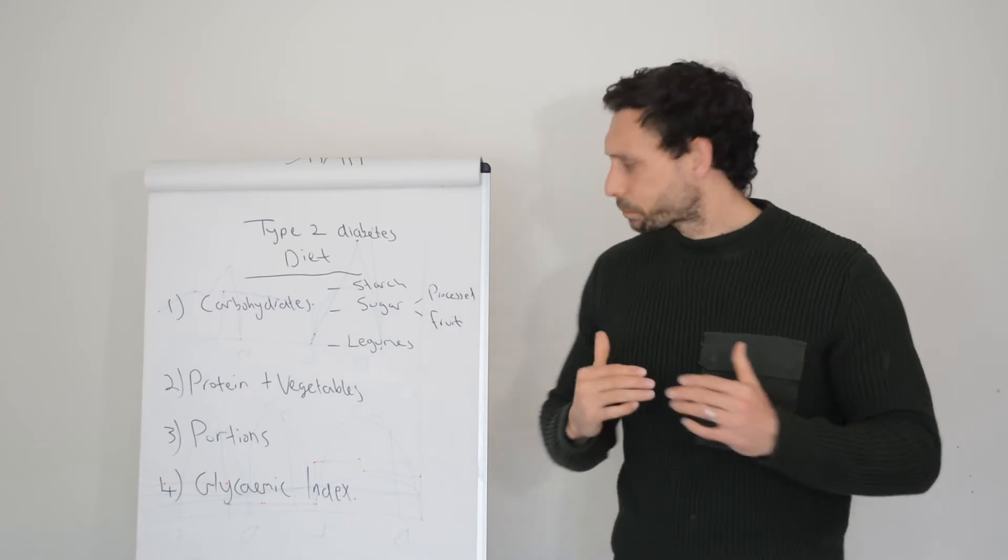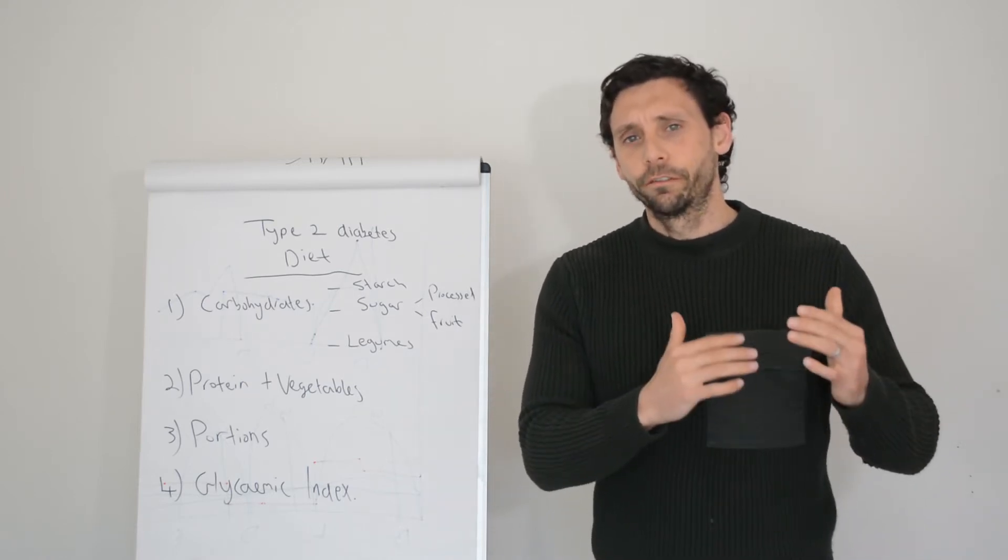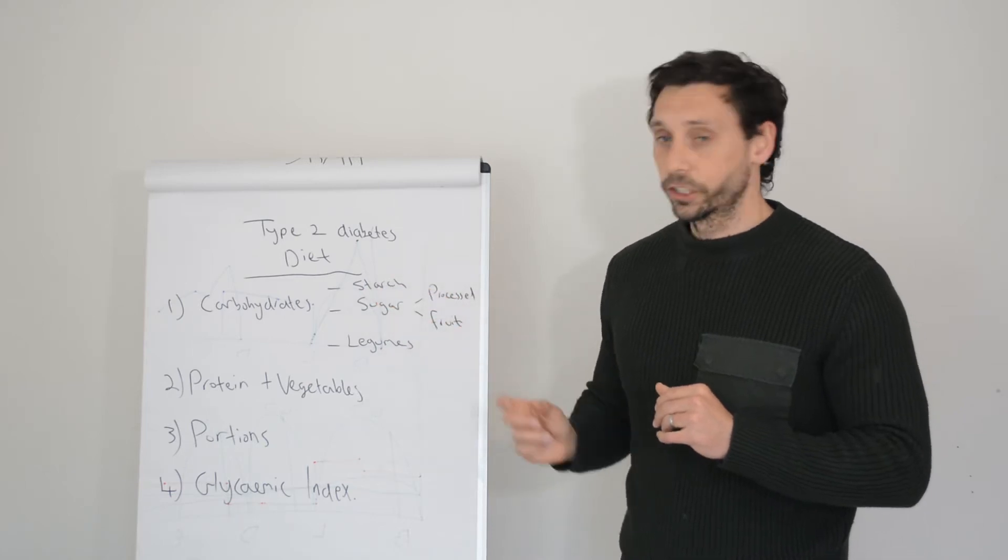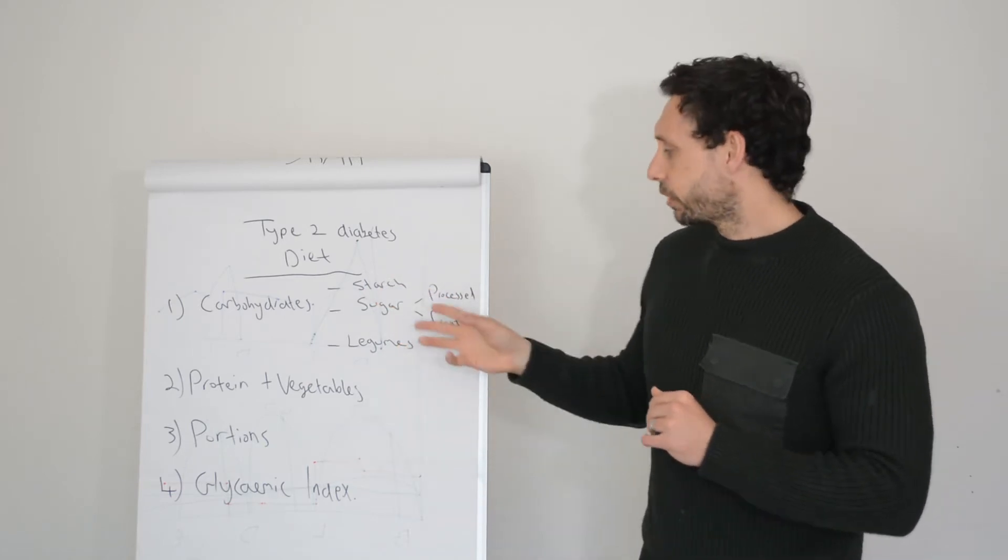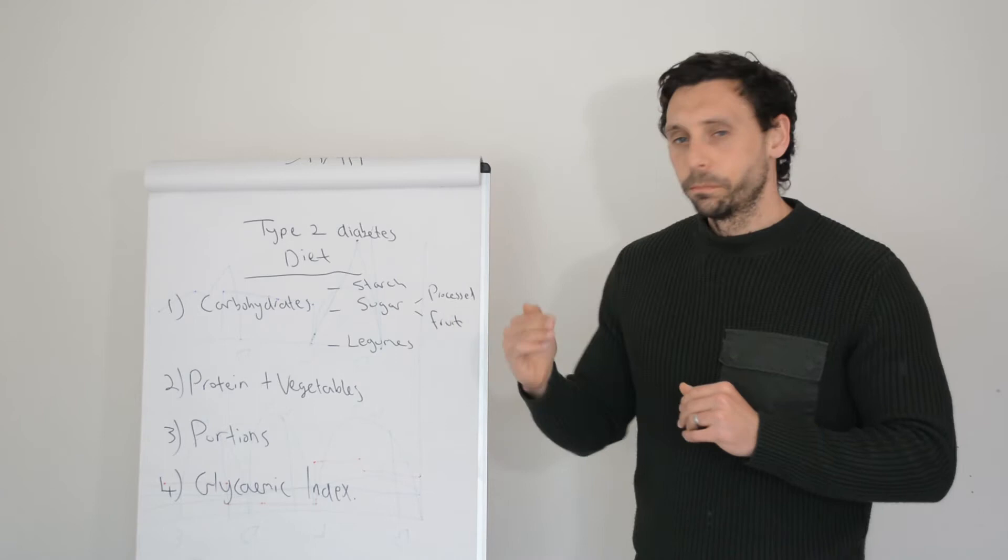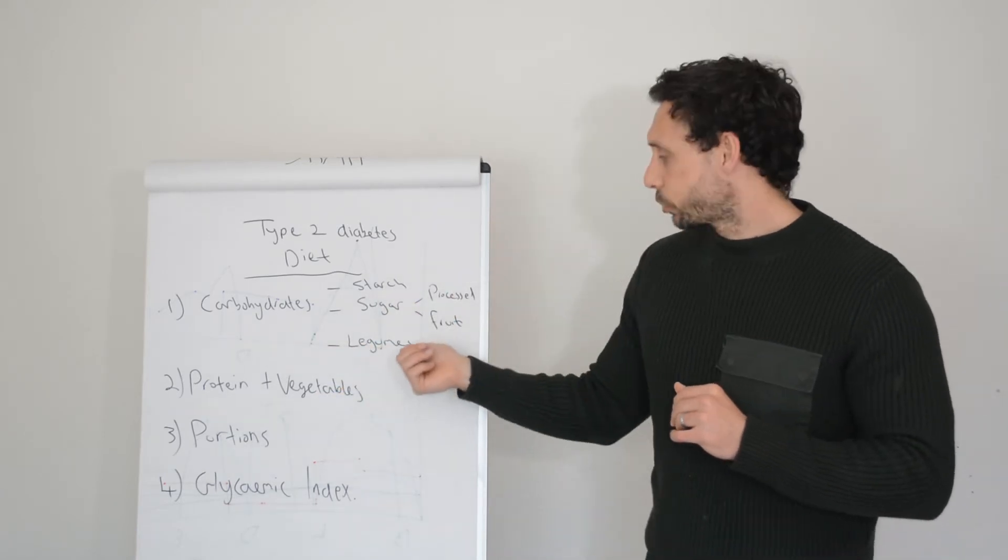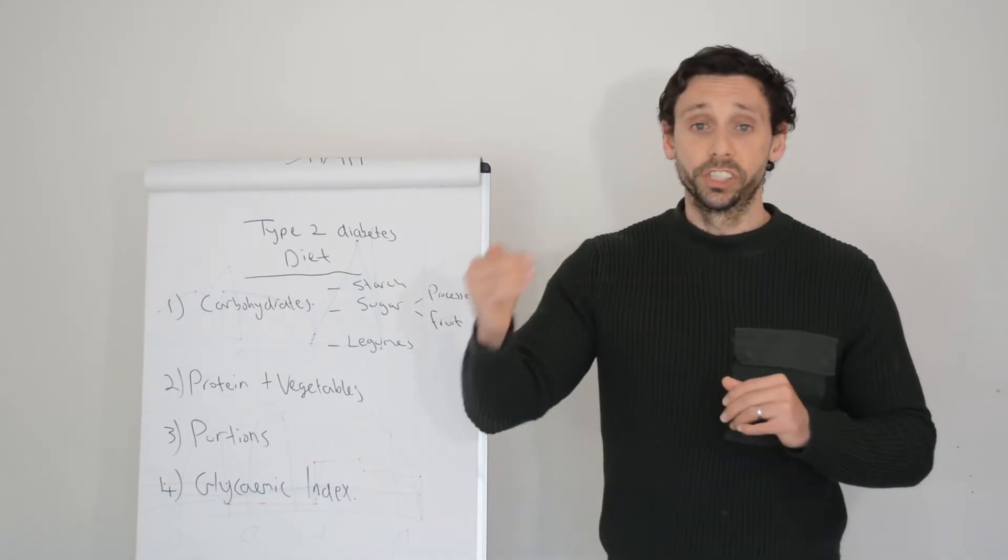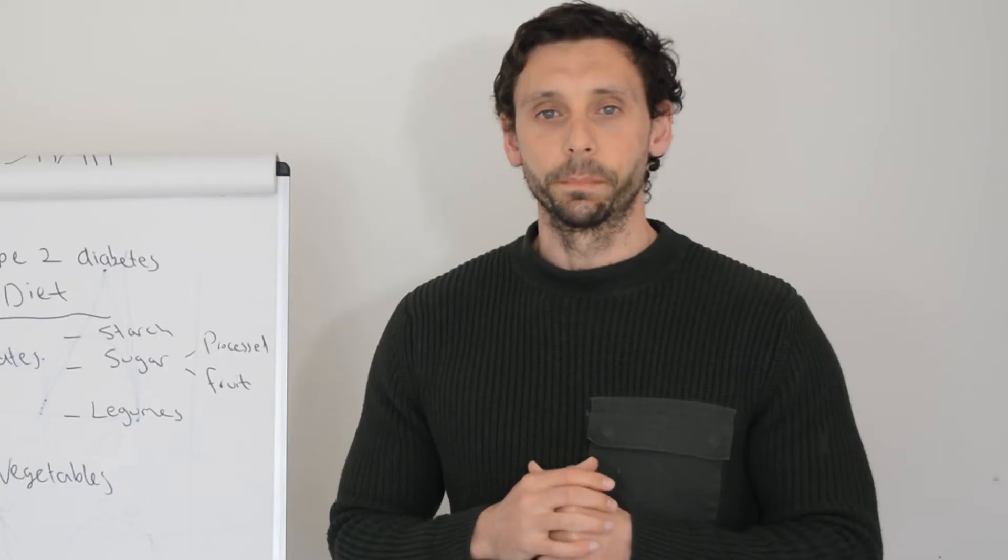Fruit to a certain extent, but there's not a whole lot of sugar in fruits comparative to the amount of carbohydrate in starch and processed sugars. Same for legumes. Really, these are rarely the problem in terms of natural sugars and natural starch in legumes. It's more the starchy foods and sugary foods from processed sources that are the big problem.